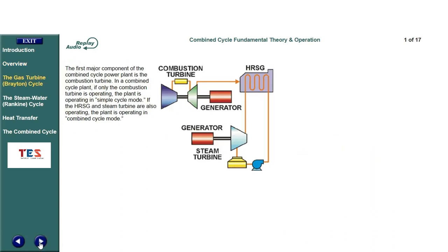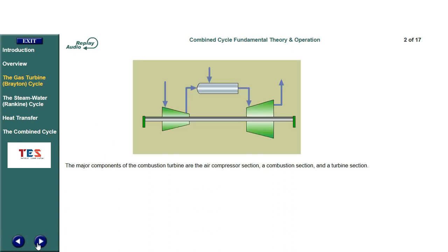The first major component of the combined cycle power plant is the combustion turbine. In a combined cycle plant, if only the combustion turbine is operating, the plant is operating in simple cycle mode. If the HRSG and steam turbine are also operating, the plant is operating in combined cycle mode. The major components of the combustion turbine are the air compressor section, a combustion section, and a turbine section.